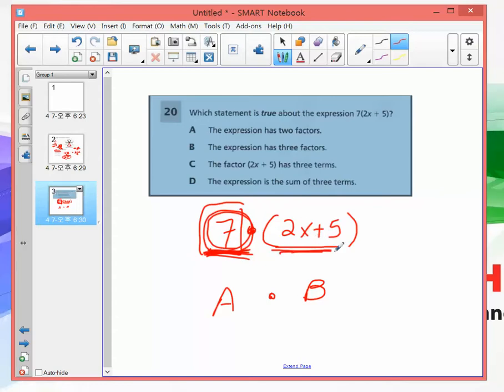The expression has three factors. Are you seeing three things being multiplied? No, you see two things being multiplied, this and this. So B is incorrect. The factor 2x plus 5 has three terms. This factor right here, they just gave the answer away—they called this a factor.